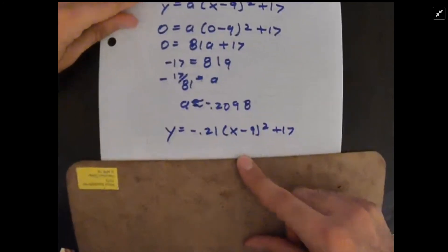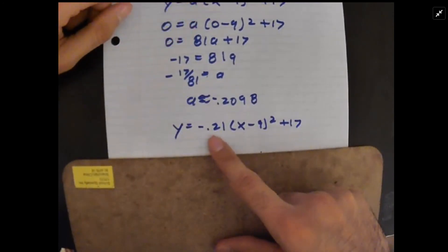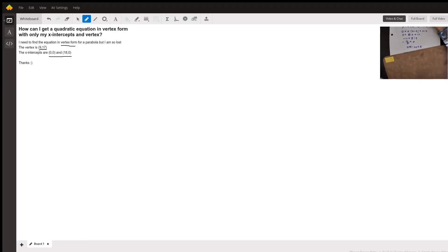So putting that all together, right here is your final equation: y = (and I rounded) -0.21(x - 9)² + 17. So there you go, I hope you enjoyed.